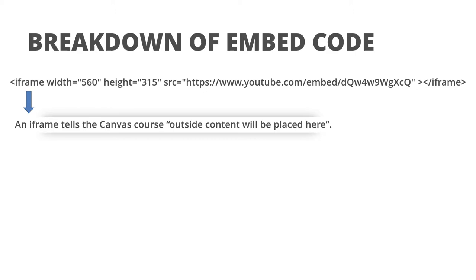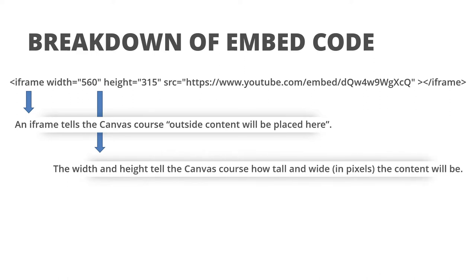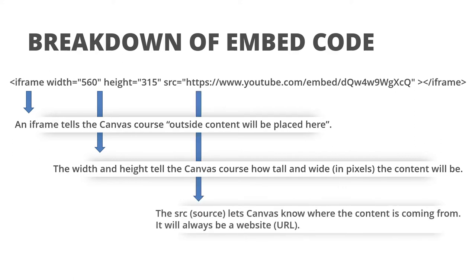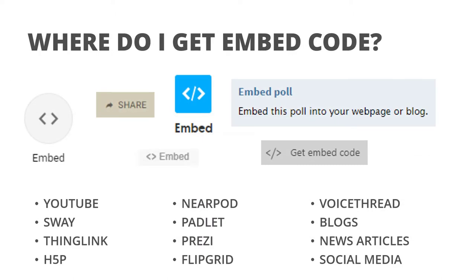Here's the breakdown of embed code. I'll start with an iframe — this is probably the most basic embed code you could see. The essential components are: first, the iframe tag, which tells Canvas that outside content will be placed right here, whether that's an image, a Padlet, a Sway, or a YouTube video. Next, you define the width and height — these tell Canvas how tall and wide in pixels the content will be. Finally, the src (source) tells Canvas where the content is coming from — always a URL, something that lives on the internet. We're not uploading it to Canvas; we're pulling it in from elsewhere.